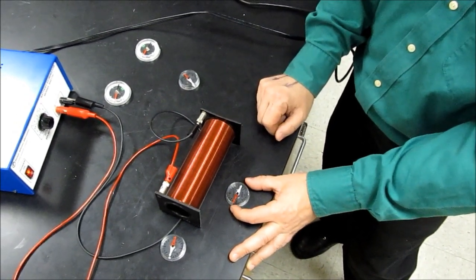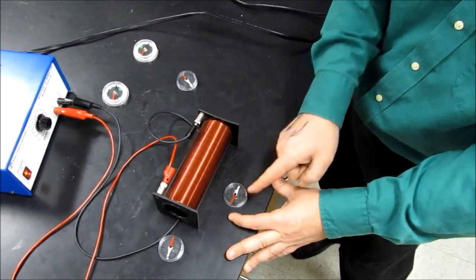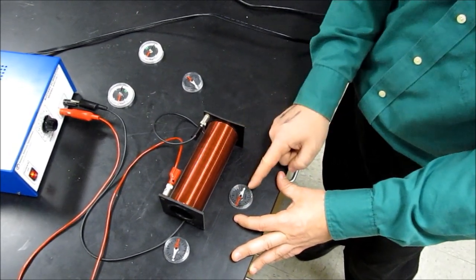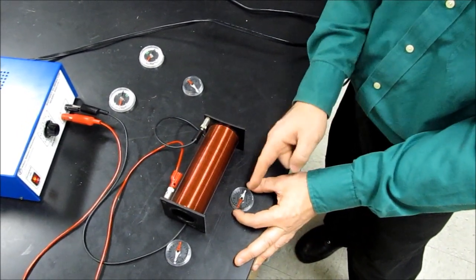Why is that? Magnetic fields are vectors. The south pole is pulling on this north pole of the compass, and this north pole is pulling on the south pole of the compass with equal forces, so they're balanced.